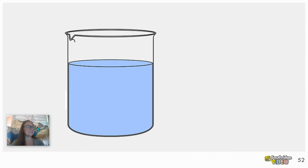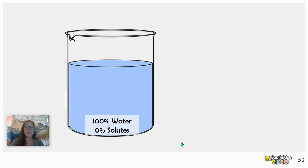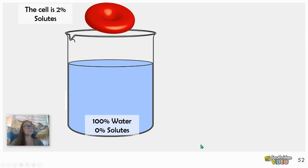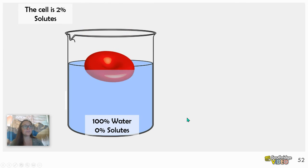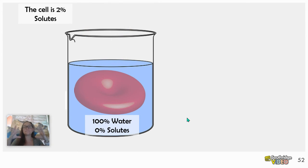Here's my last slide. We have a beaker of water — 100% water on the outside and 0% solutes. We take a red blood cell that's 2% solutes, which means it's 98% water inside. When this red blood cell enters into the beaker, it gains mass because there's 100% water on the outside in a hypotonic solution compared to 98% on the inside. So water has a net movement inward, which causes the cell to expand.